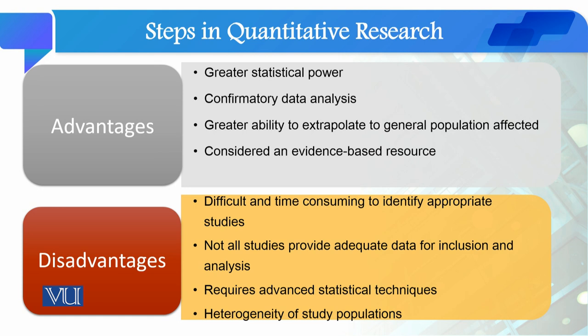اب دیکھتے ہیں meta-analysis کے advantages اور disadvantages کیا ہیں۔ پہلا advantage ہے greater statistical power — meta-analysis سے جو results آپ draw کرتے ہیں وہ statistically زیادہ strong ہوتے ہیں اور ان کی generalizability بہتر ہوتی ہے۔ Meta-analysis ایک confirmatory data analysis ہوتا ہے — initial preliminary analysis ہو چکا ہوتا ہے اور آپ ایک طرح سے اسے re-assess اور confirm کر رہے ہوتے ہیں۔ اس میں آپ کو greater ability to extrapolate بھی حاصل ہوتی ہے۔